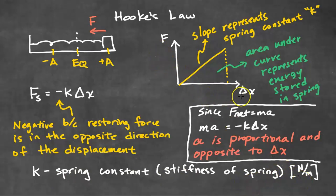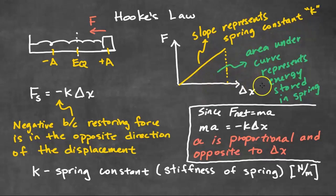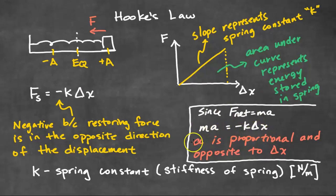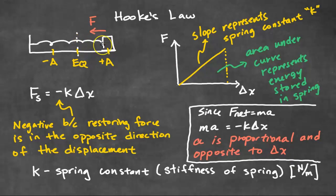Here is a force versus displacement graph. On this type of graph, the slope represents the spring constant K, and the area under the curve represents the energy stored in the spring. Since the net force equals MA, we can say that MA equals negative K times the displacement delta X. This tells us that the acceleration is proportional and opposite to the displacement. So as I pull this block to the right, increasing that displacement increases the restoring force, and when I let it go, it also increases the acceleration.